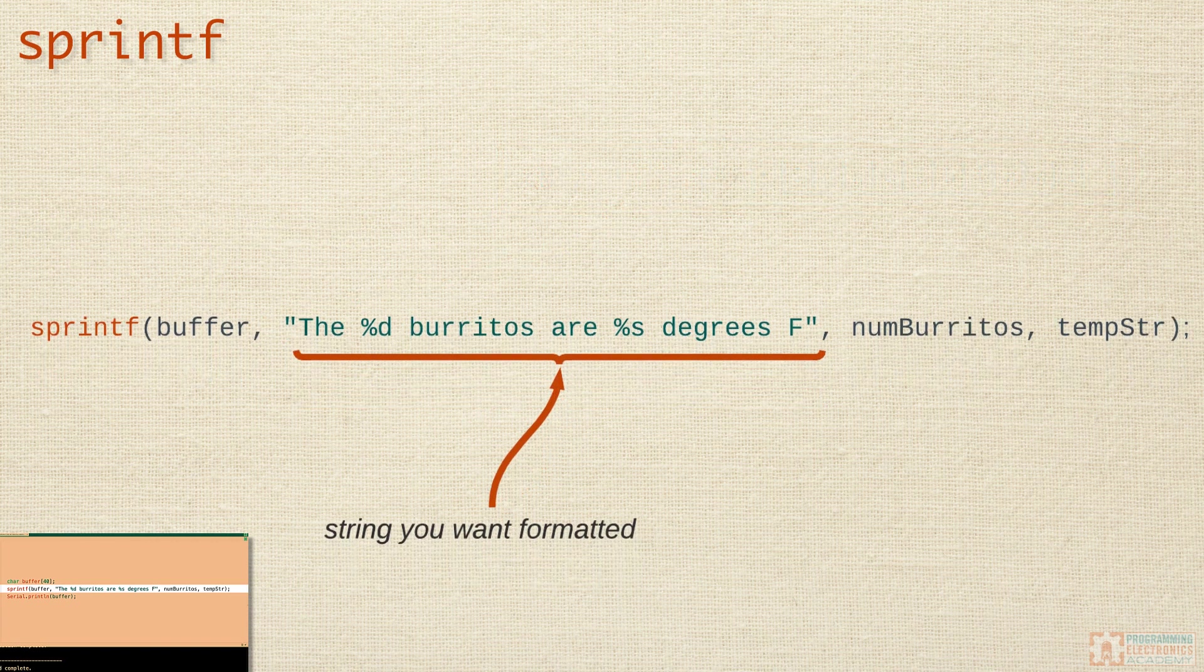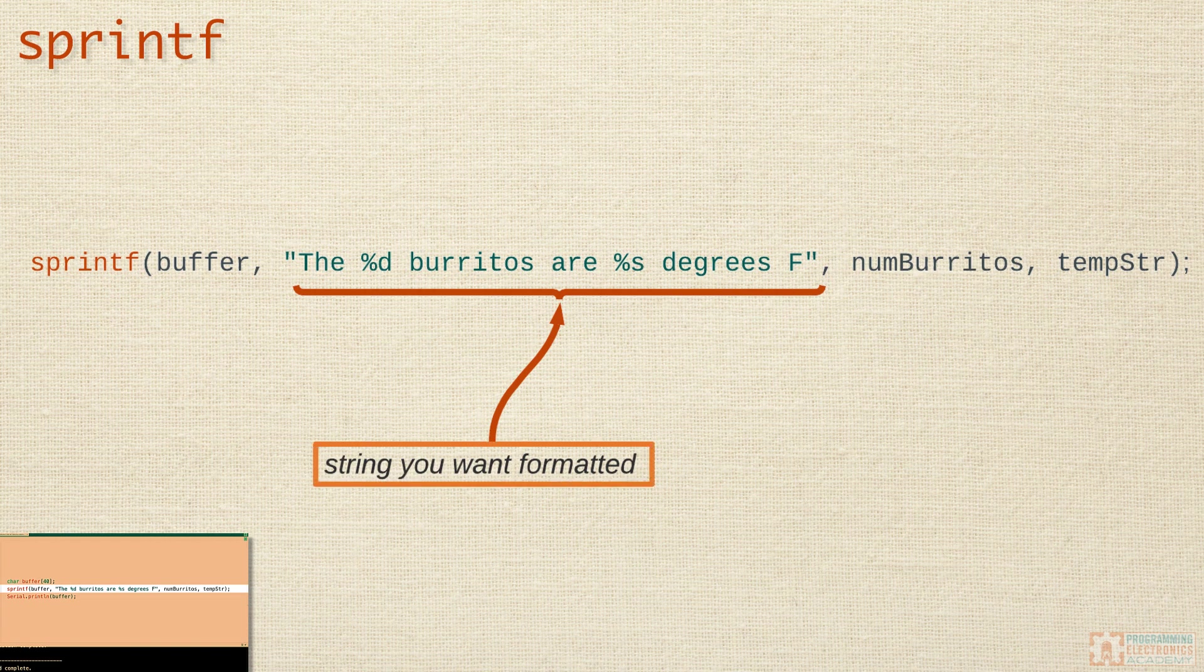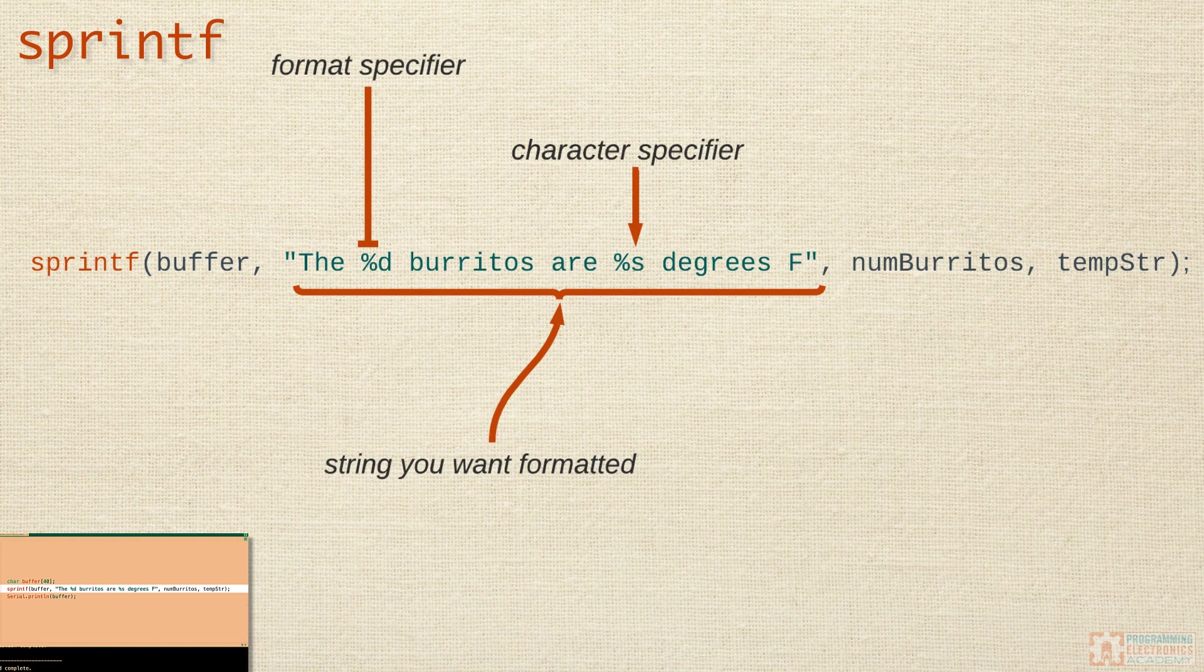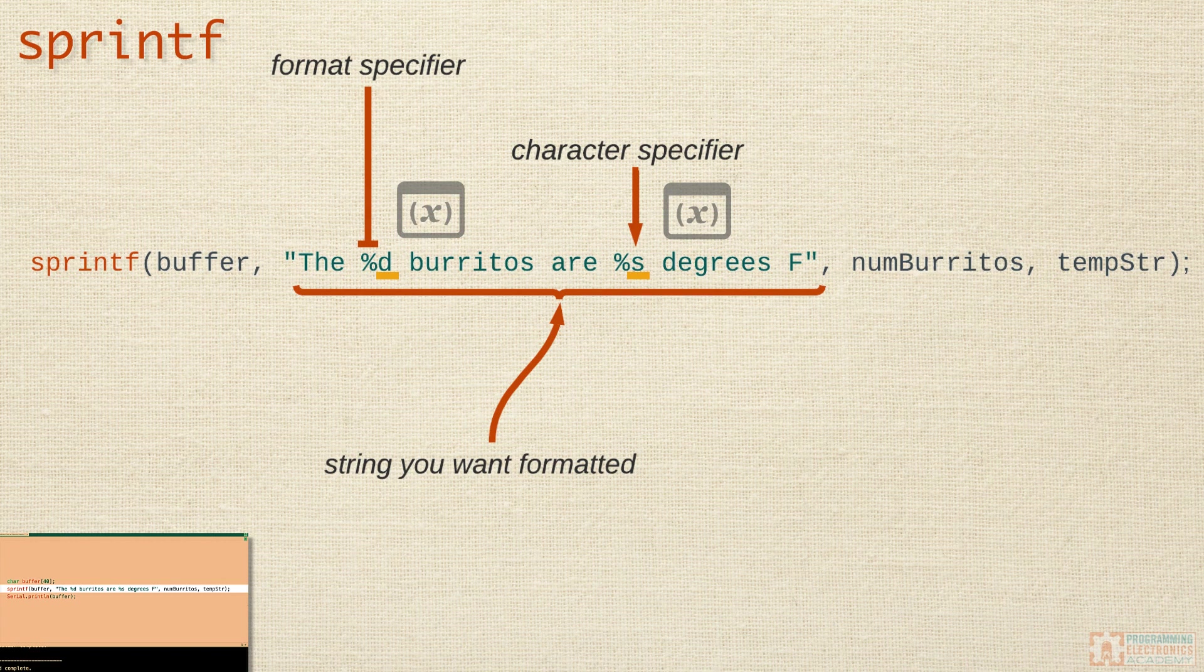The next argument is the string that you want to create. It's going to be filled in with format specifiers, where you want to insert your variables. The format specifier starts with the percent sign. And the letter following the percent sign is called the format character. And it tells sprintf what data type is going to be used for that variable. So in this example, we have two format specifiers. This means that we want two variables inserted into the output string.